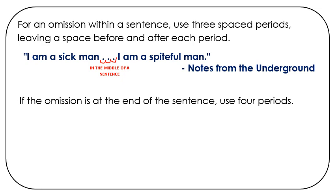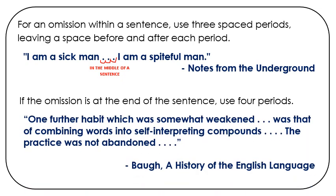If the omission is at the end of the sentence, use four periods. For example: 'One further habit, which was somewhat weakened. . . .' Notice there was an omission here. There is a space before and between each period and after the last. We have the three for the ellipsis and then the period for the end of the sentence.